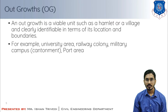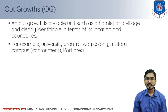As per the Census of India 2011, the number of statutory towns in India is nearly 4,091, census towns are 3,894, and urban agglomerations number 475.